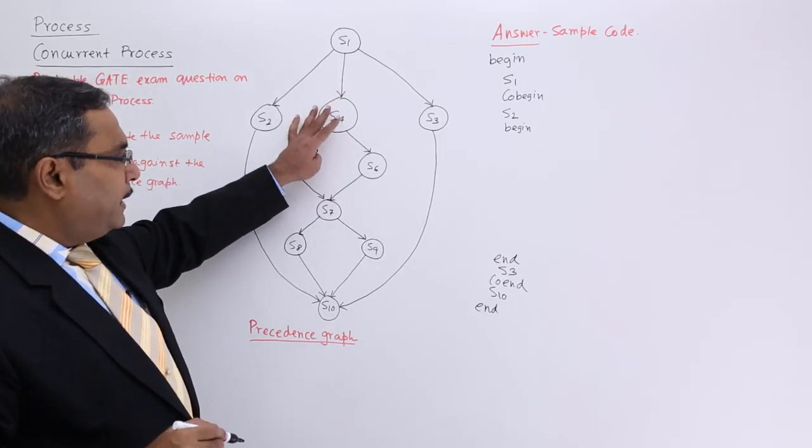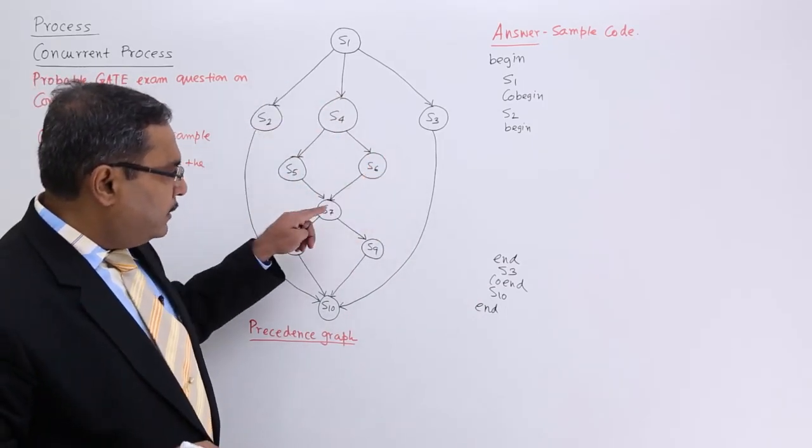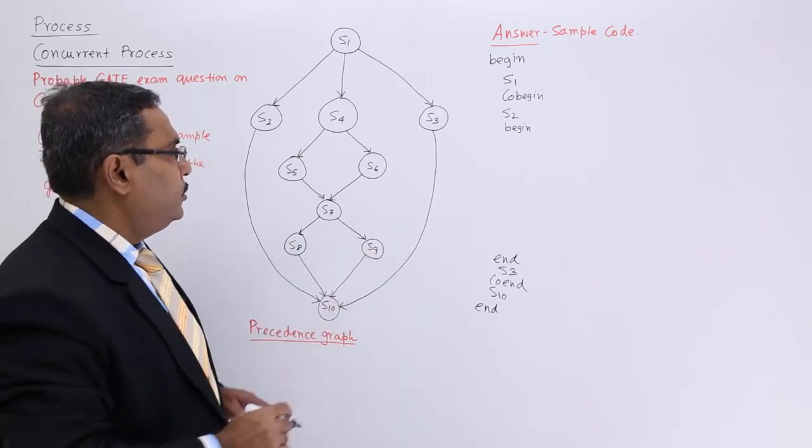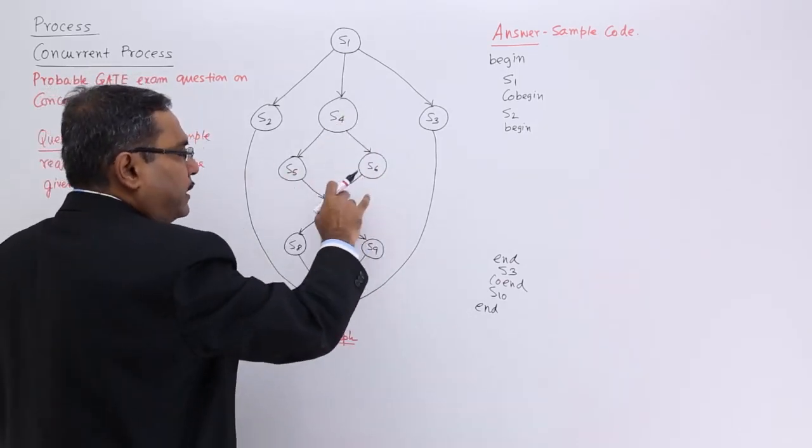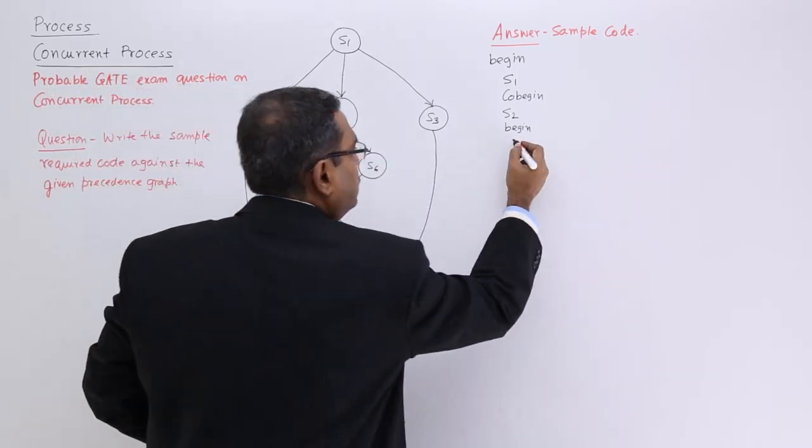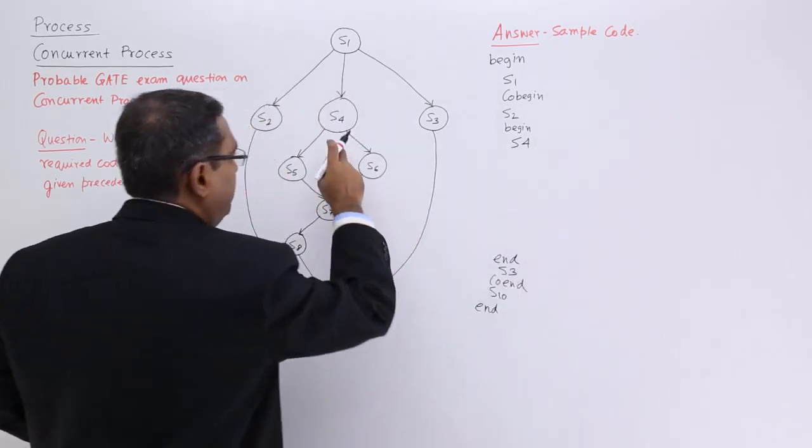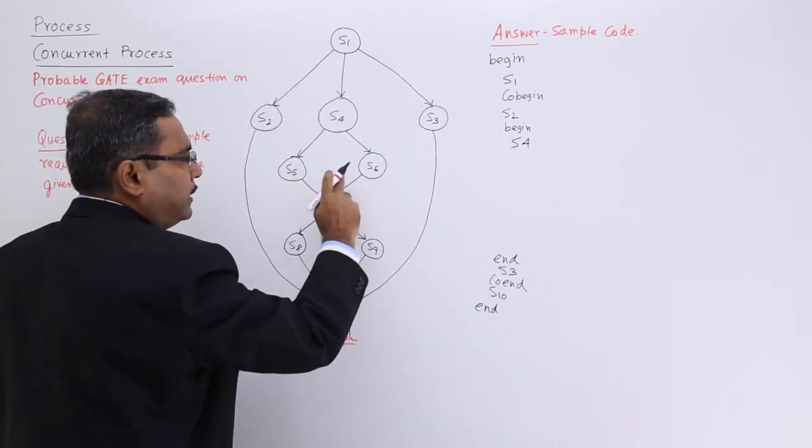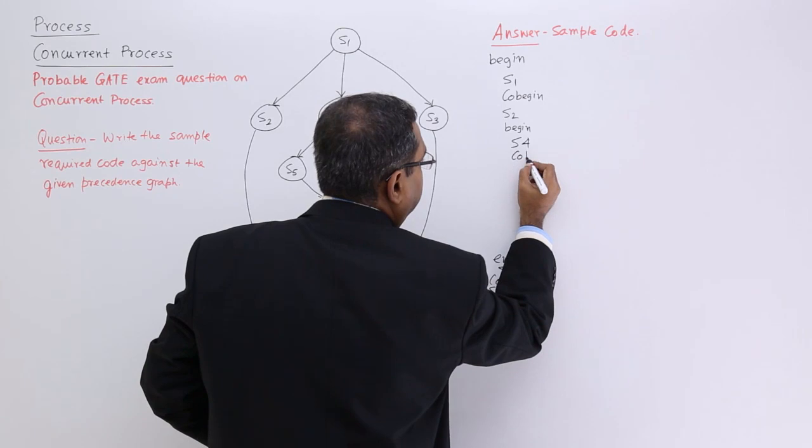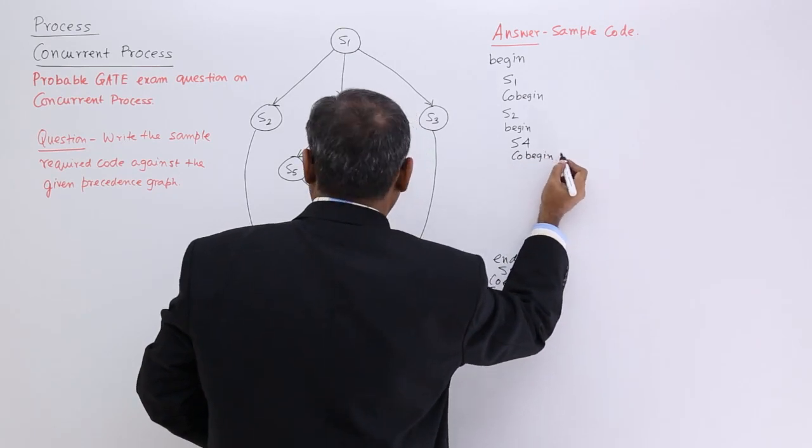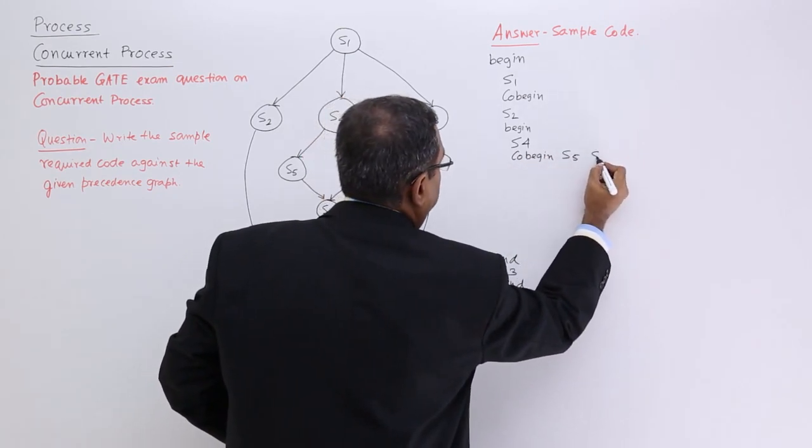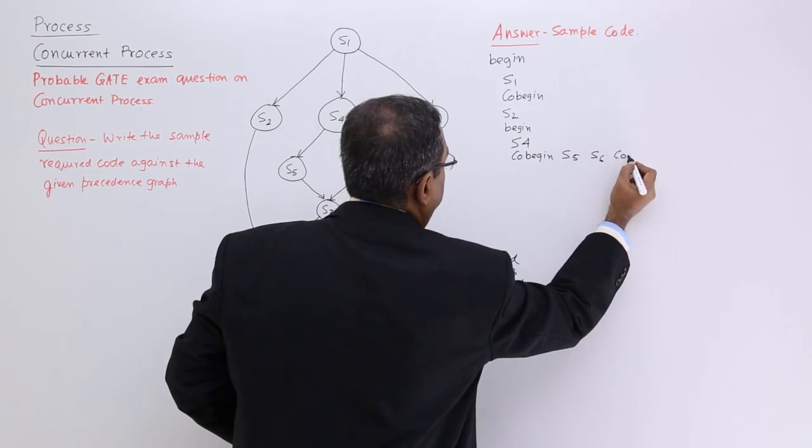These are parallel. This one, they are parallel. So that is why I make this begin. Begin S4, then they will be in parallel. So co-begin, S5, S6, co-end.